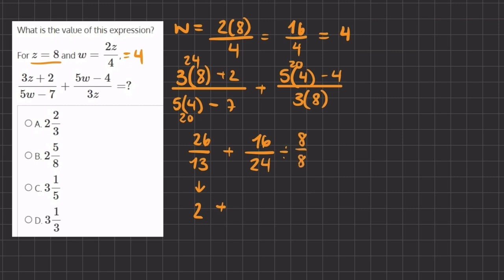If we do so, we get 16 divided by 8 which is 2, and 24 divided by 8 which is 3. So we get 2 plus 2 thirds, which will give us 2 and 2 thirds. 2 and 2 thirds is our final answer.